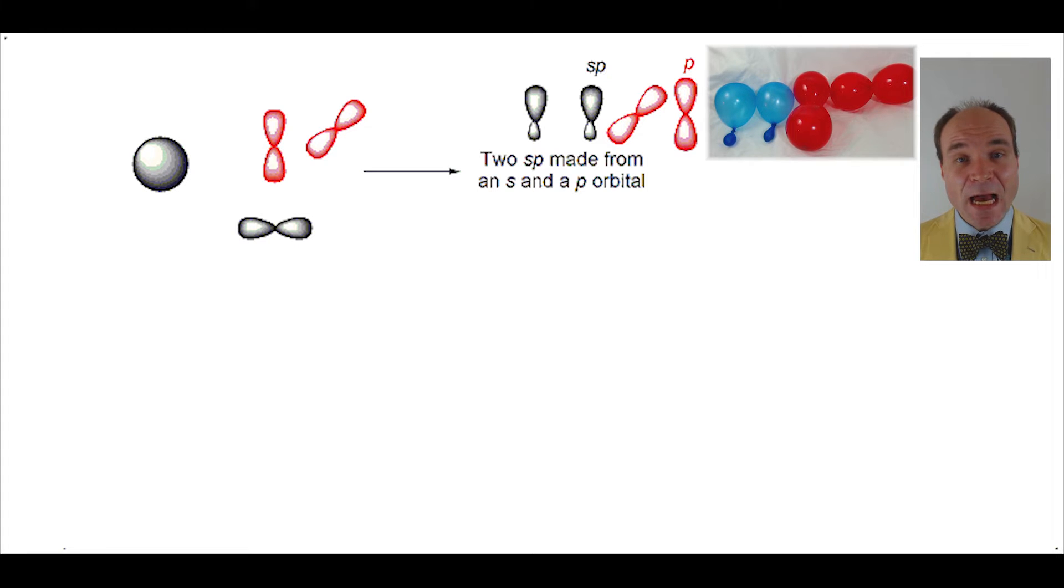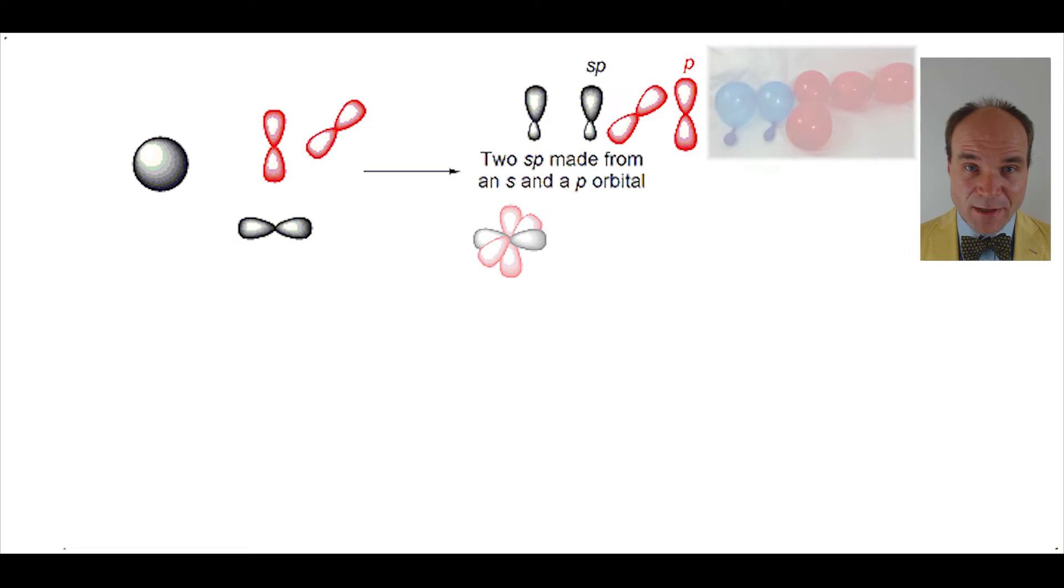Now, how are these orbitals arranged around the carbon? Well, the p orbitals are 90 degrees to each other, and the sp hybridized orbitals are 90 degrees to the p orbital. Each sp hybridized orbital is 180 degrees to the other sp hybridized orbital.